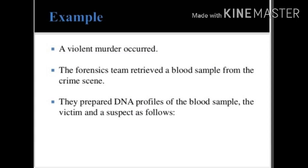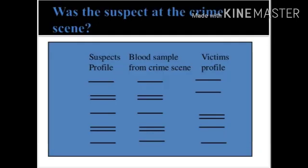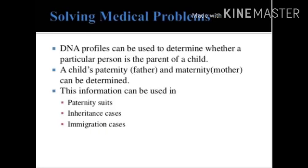They prepare a pattern from the blood sample taken from the victim. In this slide, the first is the suspect profile with its DNA pattern, the second is the blood sample from the crime scene, and the third is the victim profile. We match the DNA pattern of the suspect profile and victim profile to the blood sample — whichever profile matches more, that person is identified as the criminal.